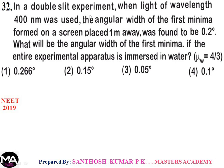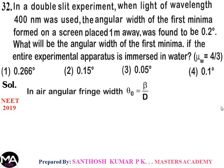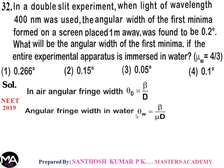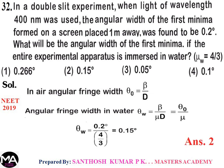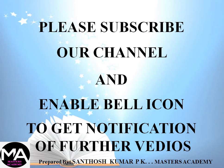Question 32: In a double slit experiment with λ = 400 nm, angular width of first minima is 0.2°. If the entire apparatus is immersed in water (μ = 4/3), what is the new angular width? Angular width in medium: θ_w = θ0/μ = 0.2 ÷ (4/3) = 0.2 × 3/4 = 0.15°. Therefore option 2: 0.15 degrees.